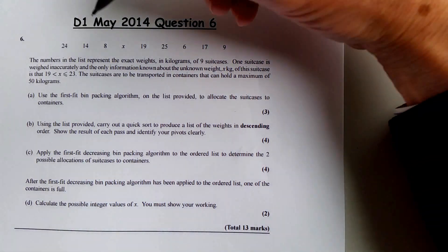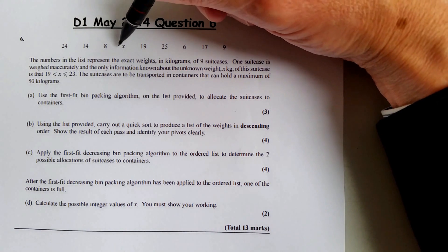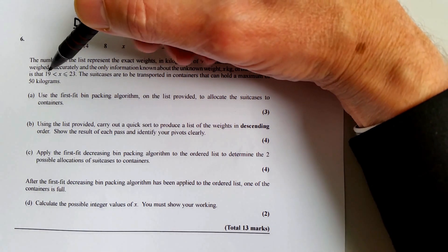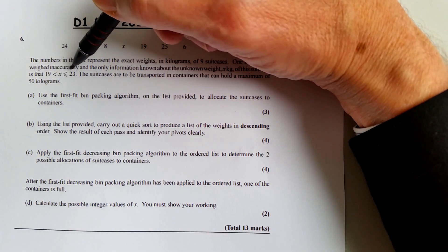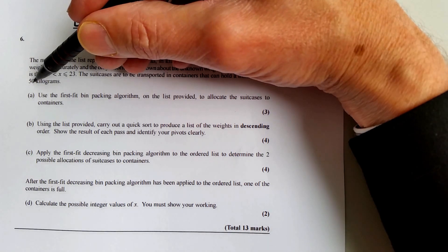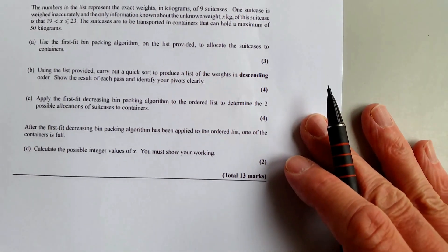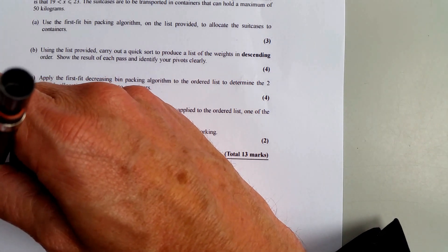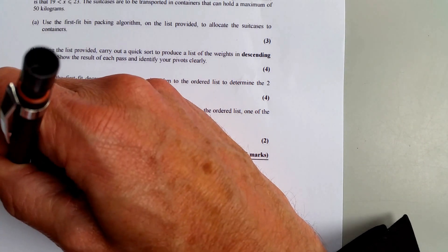We have the list here. The only difference from usual questions is we have an X value, which must be greater than 19 and less than or equal to 23. We have a maximum of 50 kilograms, so I'll write that down: 50 kilograms maximum.